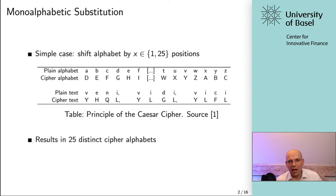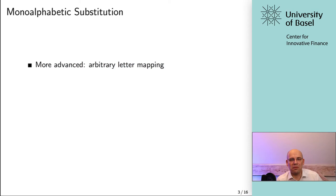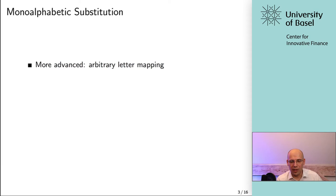The Caesar cipher results in 25 distinct cipher alphabets, so it's actually quite easy to crack when you know the rules — you just have to try 25 different alphabets. That's not the safest method to encrypt something. It could be decrypted quite easily, even without knowing the exact number of steps x, just by trial and error.